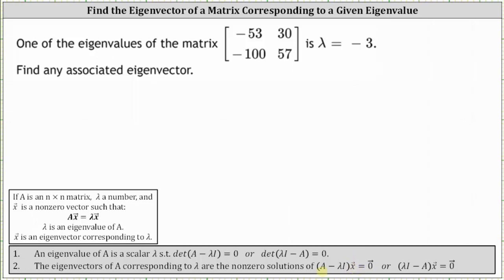Setting up this equation, we know matrix A is the given matrix and lambda is equal to negative three. So our equation is the difference of the given matrix, which is the matrix negative 53, 30, negative 100, 57.